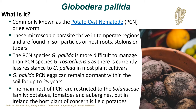Globodera palida is more commonly known as the potato cyst nematode (PCN) or eel worm. These microscopic parasites thrive in temperate regions. PCN can be found in soil particles or in the roots, stolons or tubers of host plants. The PCN species Globodera palida is more difficult to manage than other PCN species such as Globodera rostochiensis, as there is currently less resistance to Globodera palida in most plant cultivars.